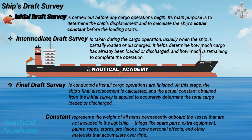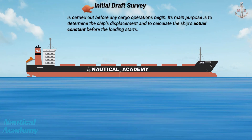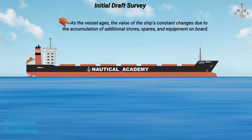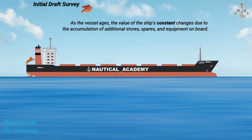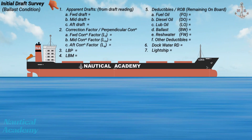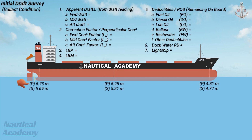This video covers only the initial draft survey, focusing on calculating the ship's actual constant. While the constant is stated in the ship's stability booklet, that value is generally reliable only when the ship is new. As the vessel ages, the ship's constant changes due to accumulation of additional stores, spares, and equipment on board. Since this is an initial draft survey, the vessel is in ballast condition with no cargo on board. To begin, we first need to gather essential data, starting with the apparent or observed drafts obtained through draft readings.